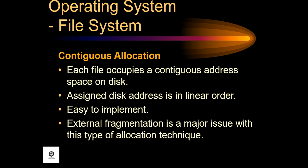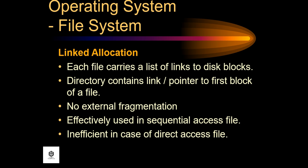In contiguous allocation, each file occupies a contiguous address space on disk. Addresses are assigned in linear order, making it easy to implement. However, external fragmentation is a major issue with this type of allocation technique.